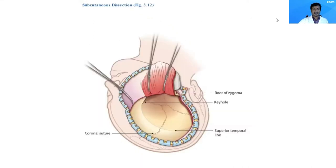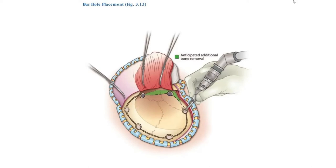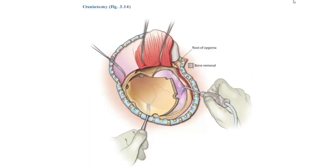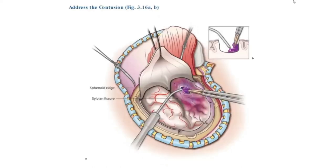Elevation of the temporalis muscle is similar to decompressive craniotomy. The bone removal is almost the same as for decompressive craniotomy or evacuation of an acute subdural hematoma. The bone flap removal and opening of the dura mater are also essentially the same as in those previous procedures.